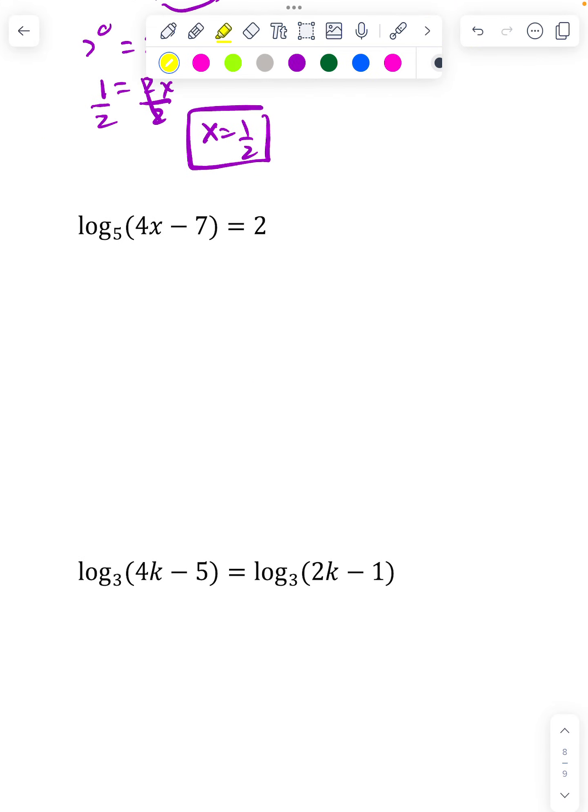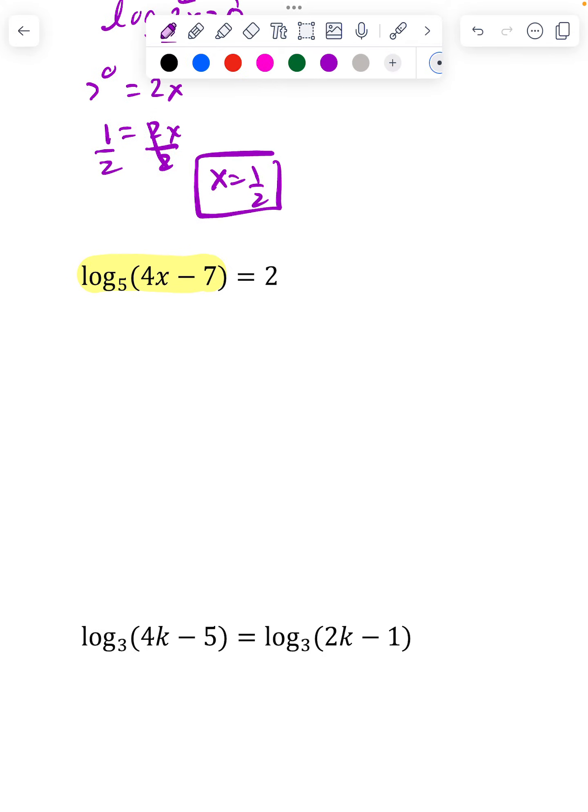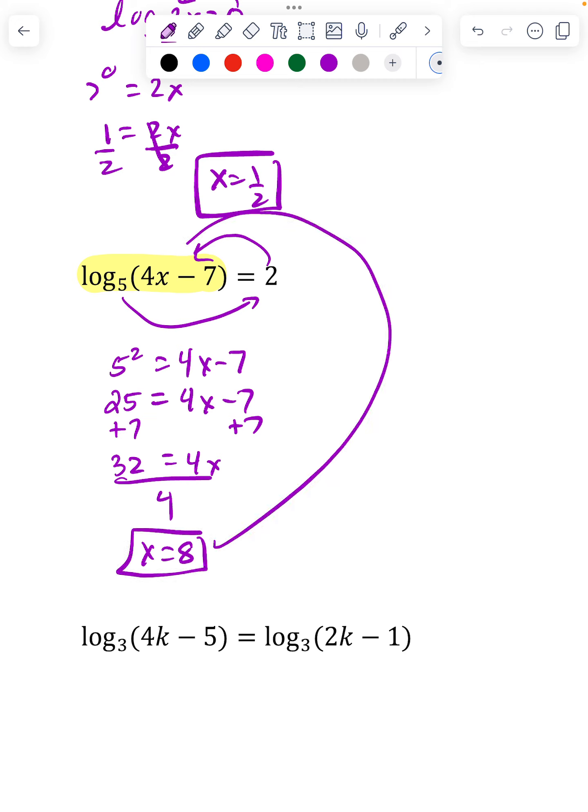So same thing here. This looks messy, but the parentheses, all of that's one log statement. So I'm ready to go and put it into the other format. So 5 squared will equal this 4x minus 7. And now it's algebra 1, because 5 squared is 25. We're going to add 7, now we have 32 equals 4x. We'll divide by 4, and we get 8. And putting 8 in for x will give us a positive number, 4 times 8 minus 7 is a positive number.